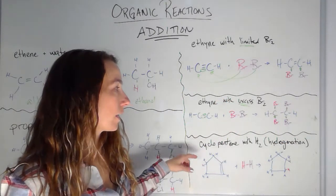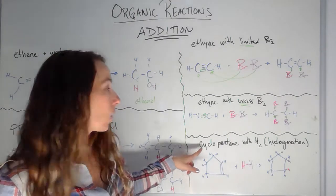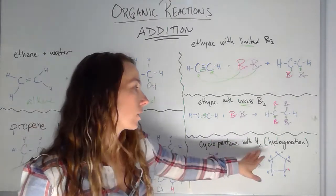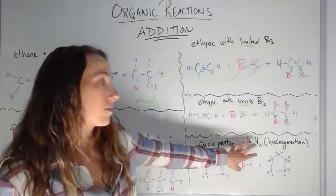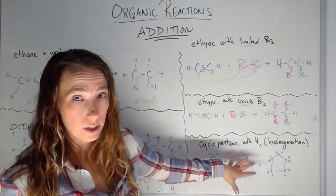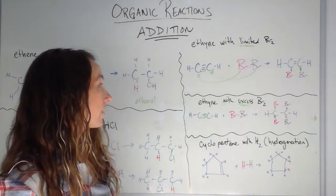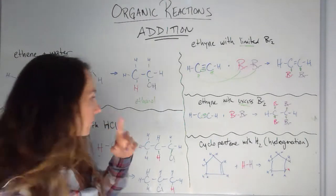And then the last example here is hydrogenation. So hydrogenation is when I'm reacting with a hydrogen, not bromine. Like this would be halogenation reacting with a halogen. So this is hydrogenation reacting with hydrogen. And this would be, I guess, hydration reacting with water, right?